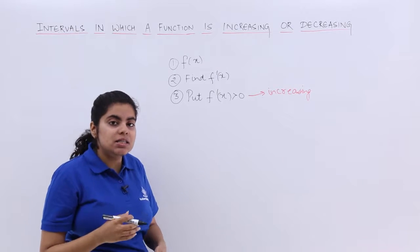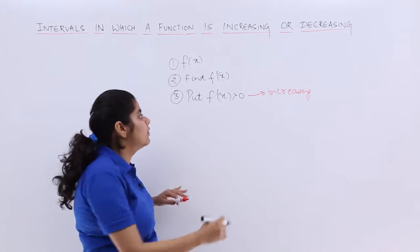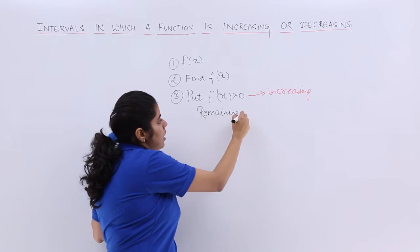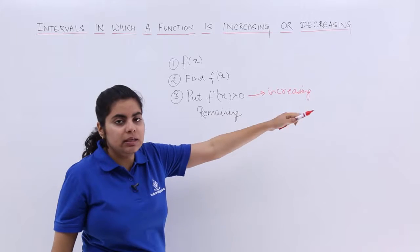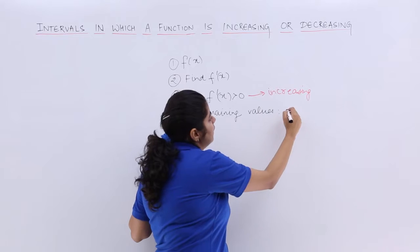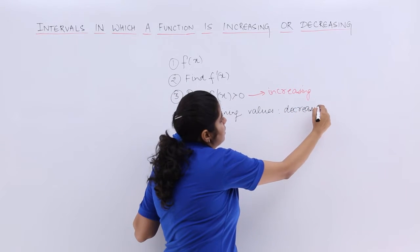But if you are asked for the decreasing intervals, the function decreasing in what intervals? Whatever the remaining values are there. F'(x) greater than 0 gave me increasing. Whatever the remaining values, whatever the remaining intervals are there, they will yield to decreasing function intervals only.